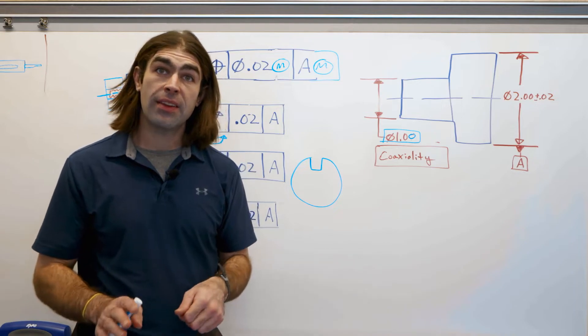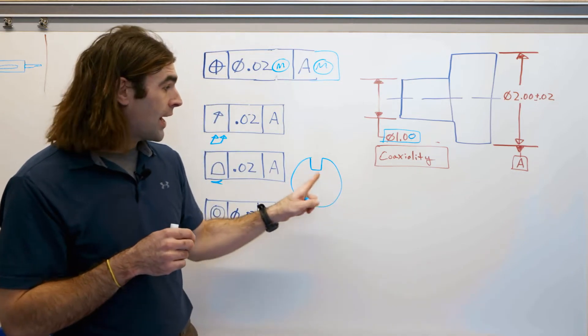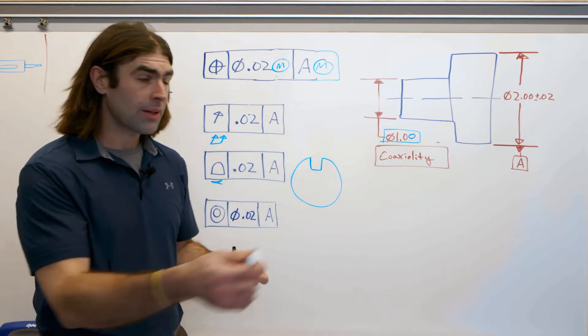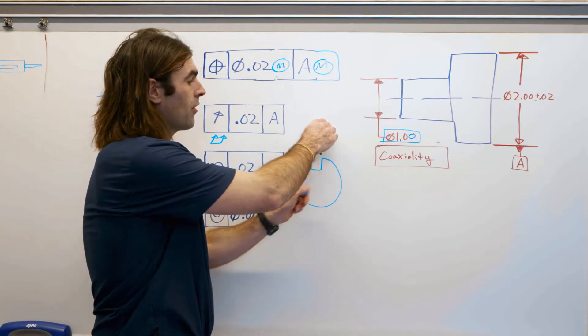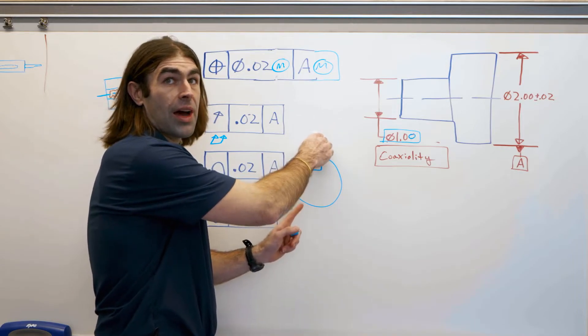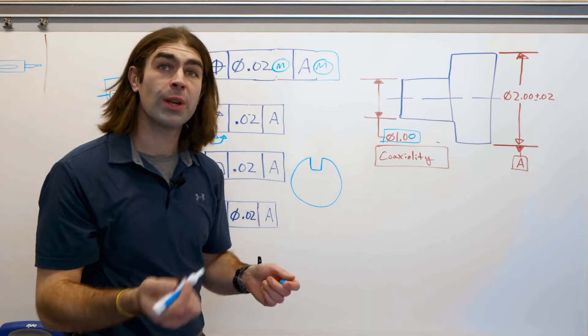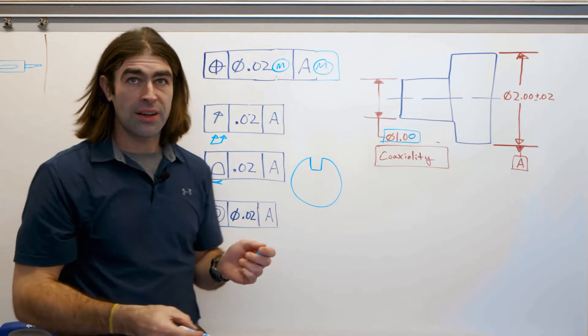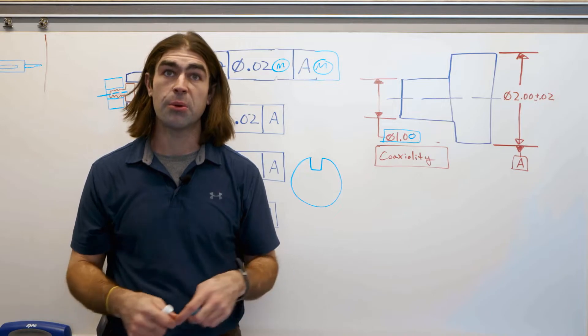In the 2018 standard, now you can use run out with something like this, so you don't have to use profile. The idea with that is, if you check this part for run out, your indicator is going to drop in here and run out fails. 2018 standard says you can just check 280 degrees around it and that's good enough.